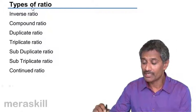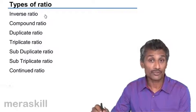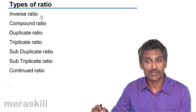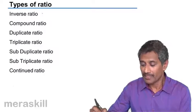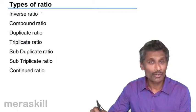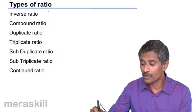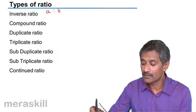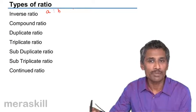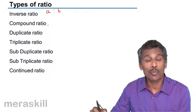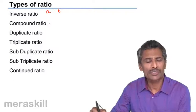Now we need to move into types of ratios, which is a very important topic. Inverse ratio - you got an idea of what inverse ratio is. If you have a is to b, its inverse ratio is going to be b is to a.